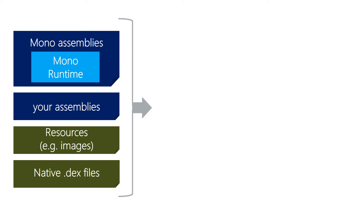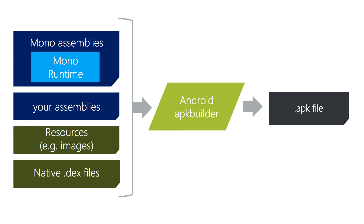The Xamarin Android build tools automatically include the Mono runtime in your APK along with your assemblies, the Mono assemblies, your application resources, and any native DEX files. The native DEX files might include external references you brought into your application, such as the Android support libraries or the Google Play libraries, which are written in Java and pre-compiled to Dalvik bytecode. All of these are combined into a single APK file ready to be deployed to a device or to the App Store.